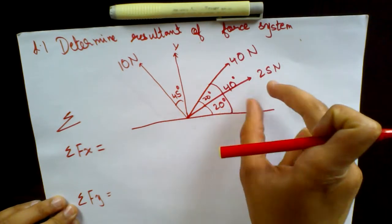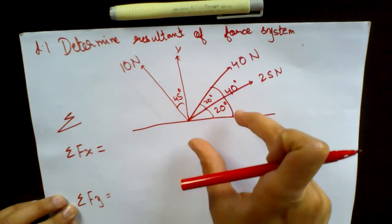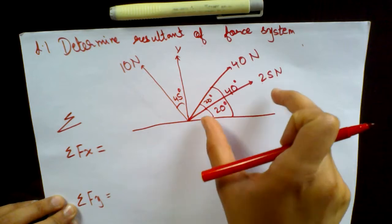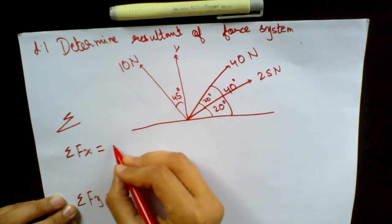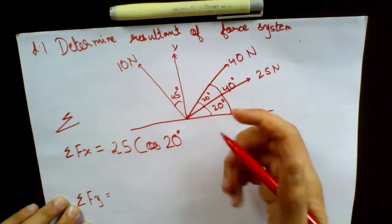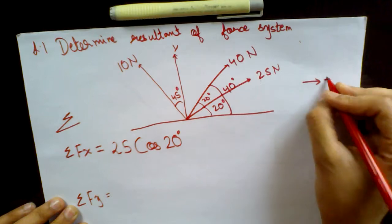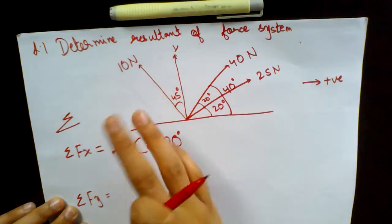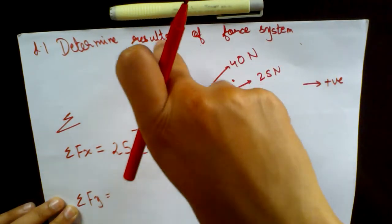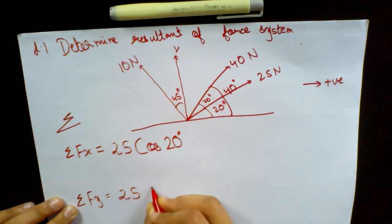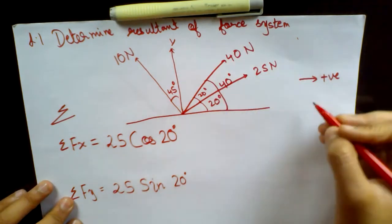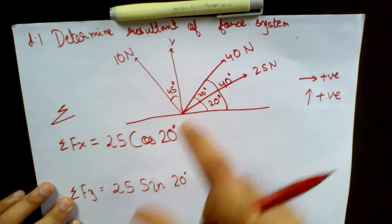Here we go. The first force is making an angle of 20 degrees with the positive x-axis, so it gets resolved into cos theta and sine theta. We write it as 25 cos 20 degrees for the x-component. Because it is moving in the rightward direction, it is positive. For summation Fy, because it is making an angle with the x-axis and not with the y-axis, this force becomes 25 sin 20, and it is also positive since it moves in the rightward and upward direction.